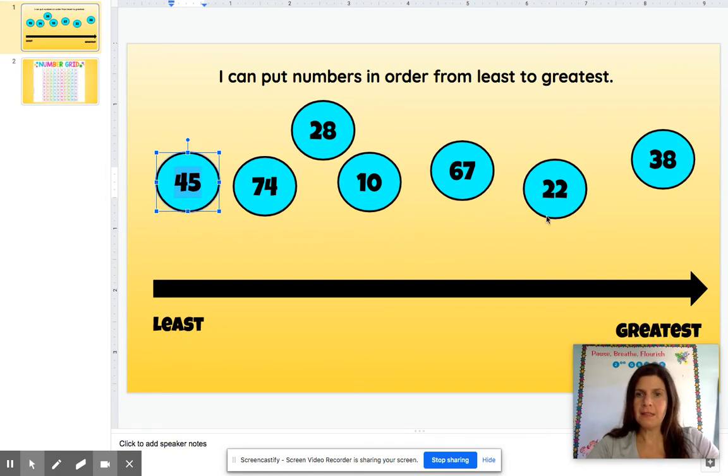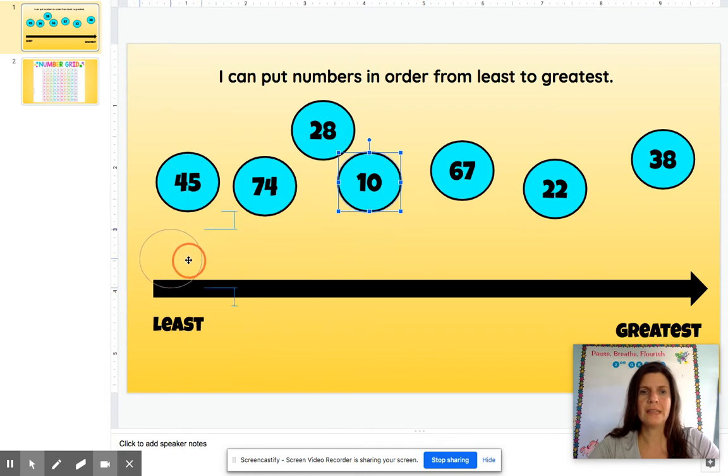When we're looking at the tens place, we want to look for the least. So this number has a one in front of it. And I don't see any other tens place with a one. So I know this is the least and it's ten. So I'm going to take this and move it right down here.